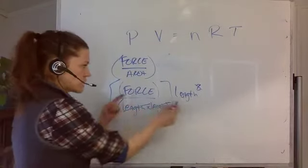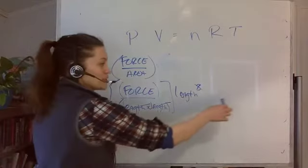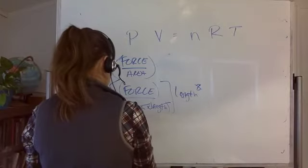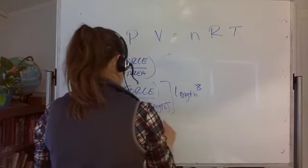So now I've got a force times just a length because my length times length times length canceled out with two of my lengths that are in the denominator. So that means I have a force times a length, also known as a force times a distance.